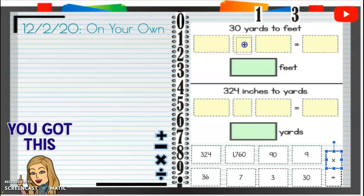So in this case, we're going to multiply by three. 30 times three. I know that 30 times three, you can do three times three, which is nine, and then put that zero with it.